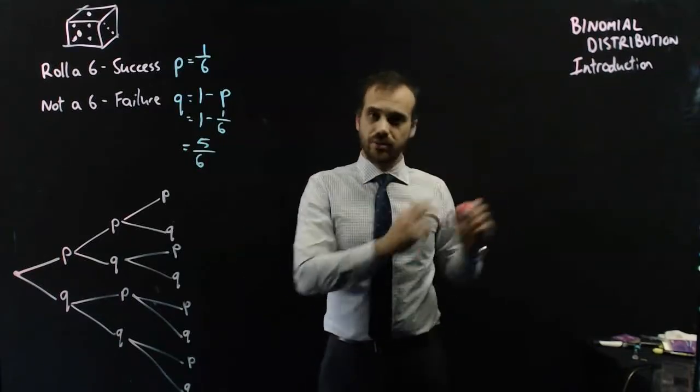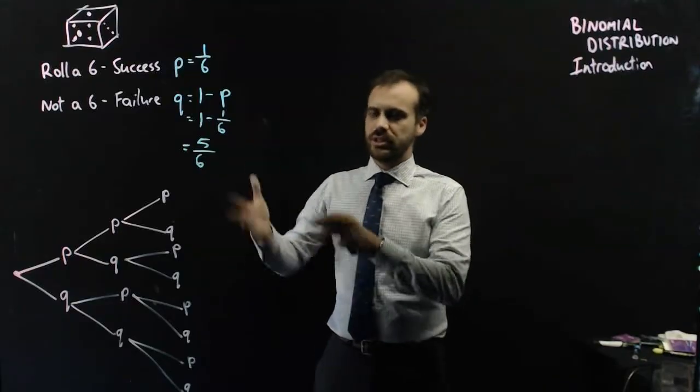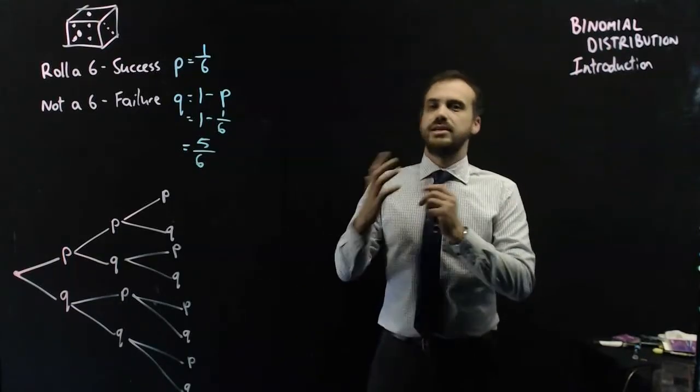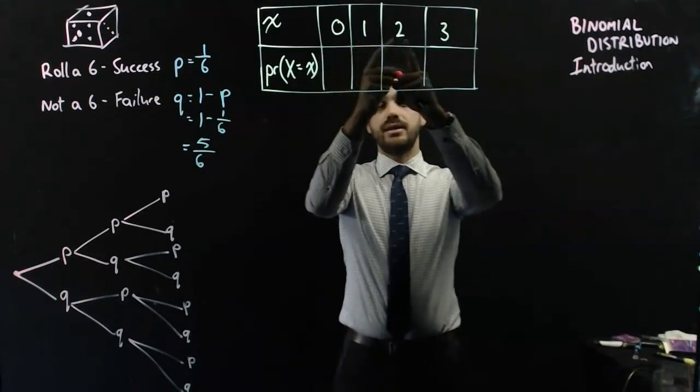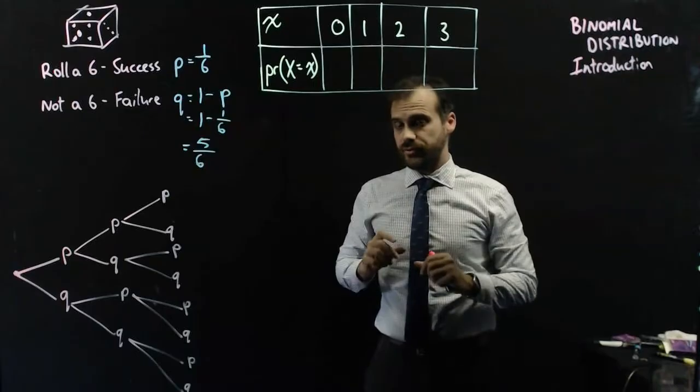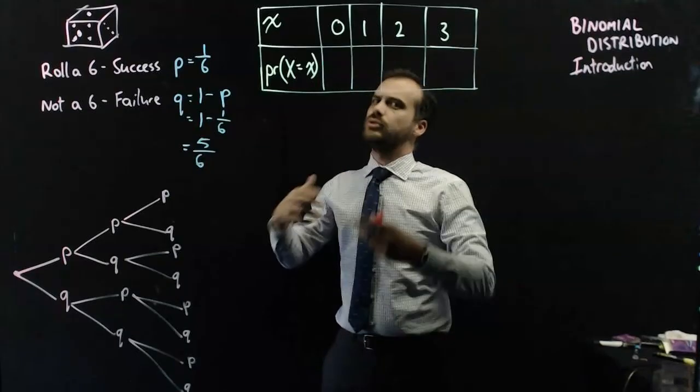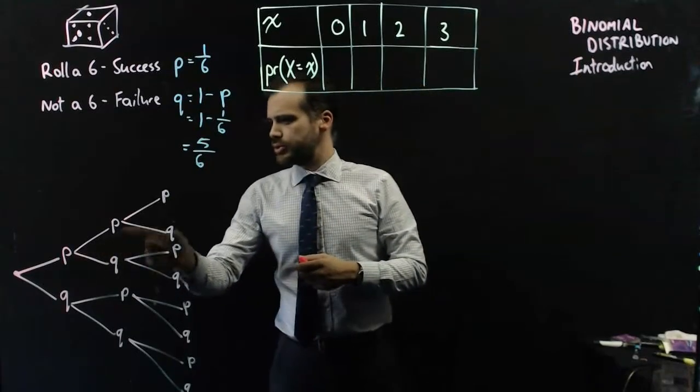In a binomial distribution, you're only really interested in a particular kind of thing. The thing that you're interested in is, how many successes do I have? Let's take a look at an example.